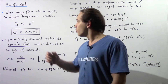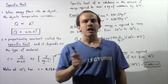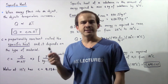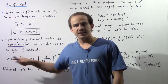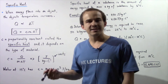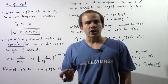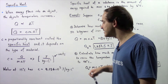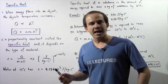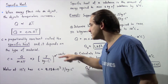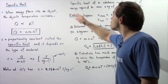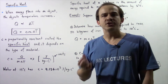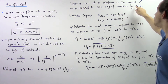What are the units of specific heat? If we take this equation and rearrange and solve for C, we'll see that C is equal to the ratio of Q to the product of M times delta T. That implies that the units of specific heat are joules per kilogram times Celsius. So the specific heat of a particular substance is the amount of energy required to raise 1 kilogram of that substance by 1 degree Celsius.